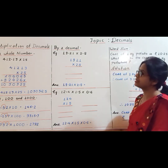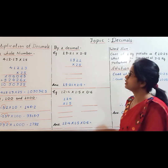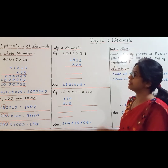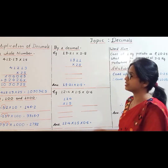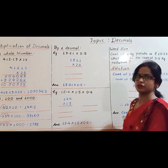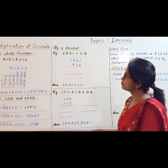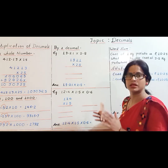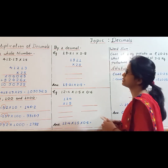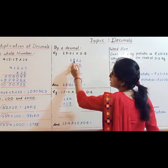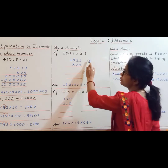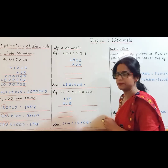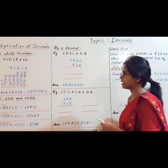Now see the example: 19.21 into 2.8. You can see both numbers are decimals, so we have to multiply a decimal by a decimal. We will multiply both numbers without the decimal point, giving us 1921 and 28. Now arrange them to multiply.